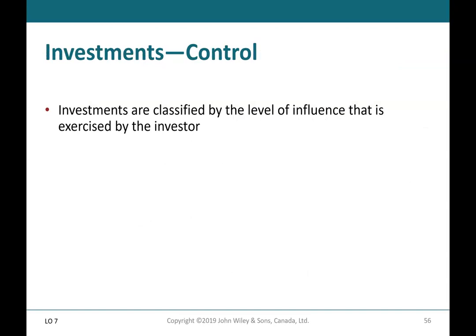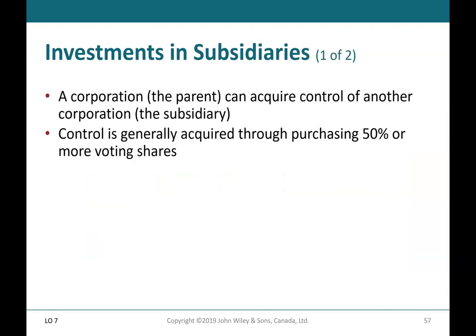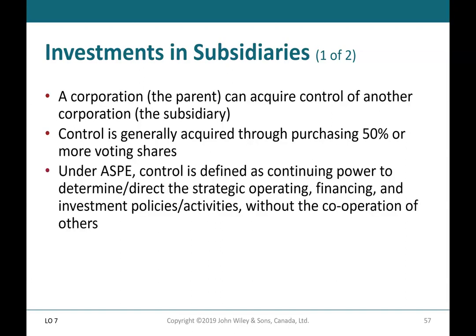Investments — Control: investments are classified by the level of influence exercised by the investor. Ownership between 50–100% represents control, and this type of investment is referred to as a subsidiary. A parent corporation can acquire control of another corporation (the subsidiary), generally through purchasing 50% or more of voting shares. Under ASPE, control is defined as the continuing power to determine and direct the strategic operating, financing, and investment policies and activities without the cooperation of others.